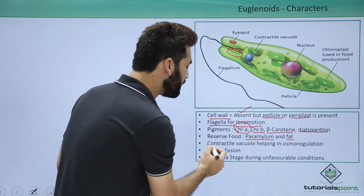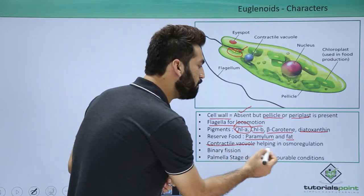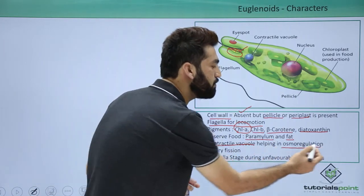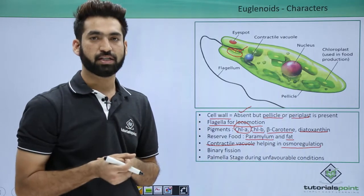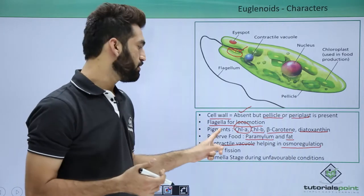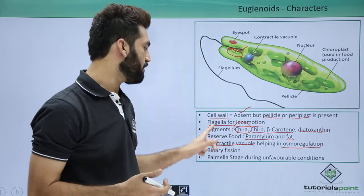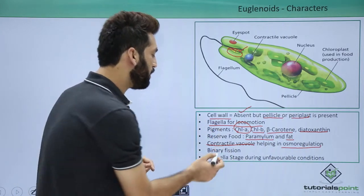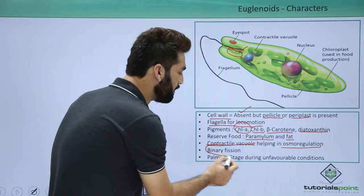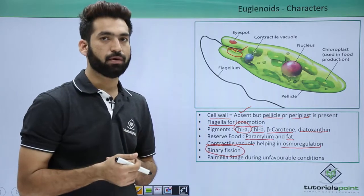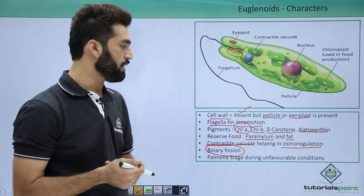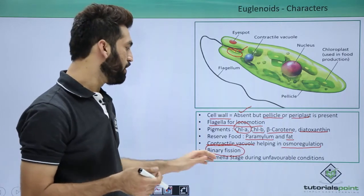They have a contractile vacuole which helps in osmoregulation — it regulates osmotic pressure inside the cell. They also divide by longitudinal binary fission, as mentioned.